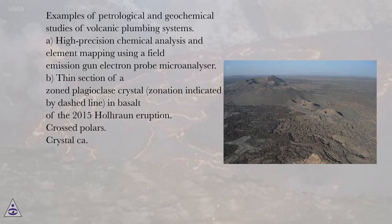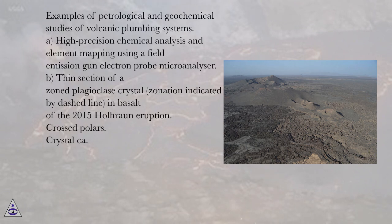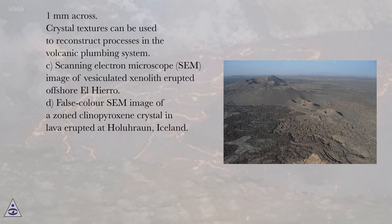Examples of Petrological and Geochemical Studies of Volcanic Plumbing Systems. A: High Precision Chemical Analysis and Element Mapping Using a Field Emission Gun Electron Probe Microanalyser. B: Thin Section of a Zoned Plagioclase Crystal, with zonation indicated by a dashed line, in basalt of the 2015 Holuhraun Eruption, crossed polars, crystal approximately 1 mm across. Crystal textures can be used to reconstruct processes in the volcanic plumbing system.